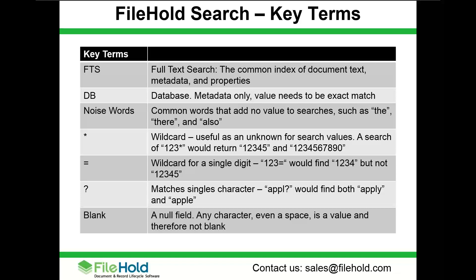There are a couple of special symbols. An asterisk is used as a wildcard — useful for unknown search values. For instance, '123*' would return '1234,' '12345,' '1234567890,' and so on, because it says 'here's the first part, give me the rest.' If I knew I was looking for a four-digit value starting with '123,' an equals sign wildcard would find '1234' but not '12345.' If I knew just the beginning and anything could follow, I'd use an asterisk wildcard.